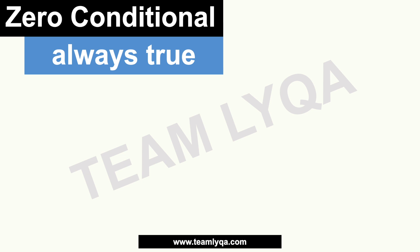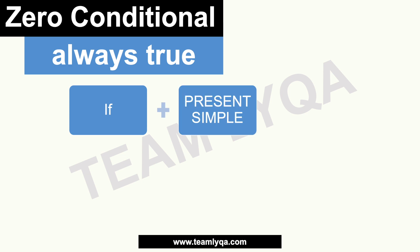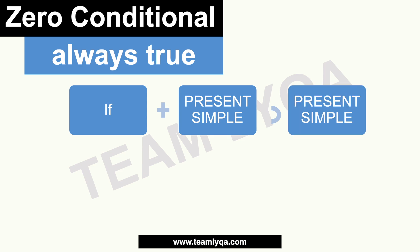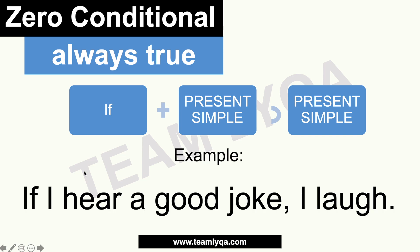The structure goes like this: you have 'if' plus present simple, then a comma, and then present simple again. An example would look like this: 'If I hear a joke, I laugh.' This is something that's always true for the person speaking — it's their habit that whenever they hear a good joke, they laugh.